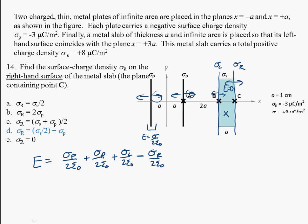Now remember, this has got to be equal to zero because we're inside the conductor here. And so we can write that zero is equal to 2 sigma P plus sigma L minus sigma R. Okay, so we know what sigma P is. Problem is we have two unknowns here. We don't know sigma L. We don't know sigma R.